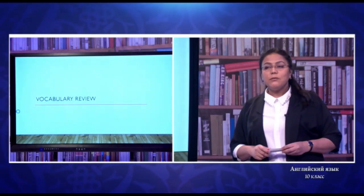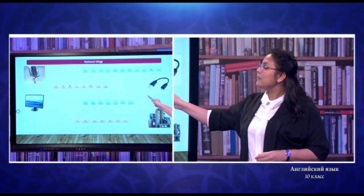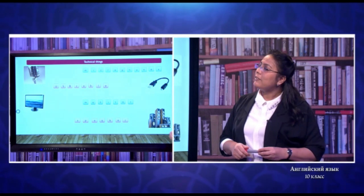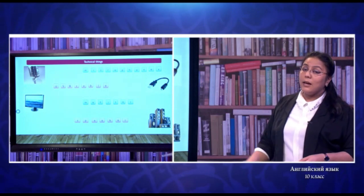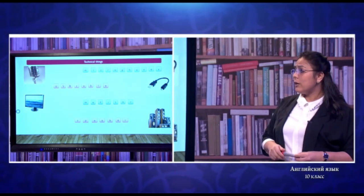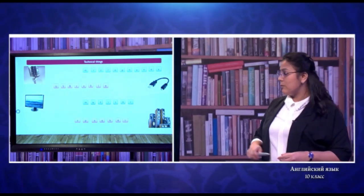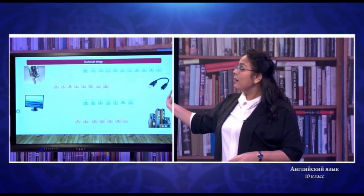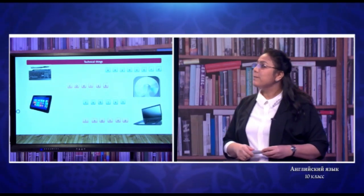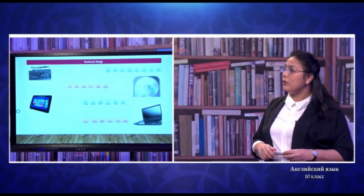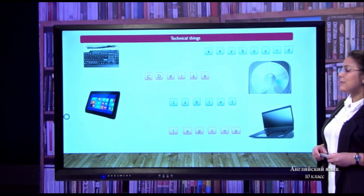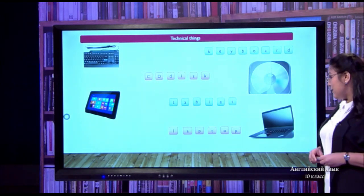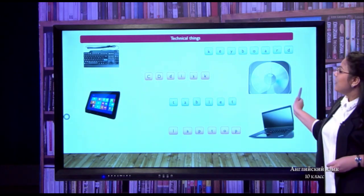Now we will have vocabulary revision. As you see, the first picture is microphones, and the second picture is USB cable, the third one is monitor, and the fourth one is speaker. Next, the first picture is keyboard, second picture is CD disk, the third one is tablet, and the fourth one is laptop. I hope you have reviewed them.